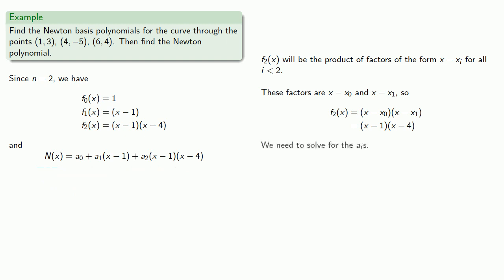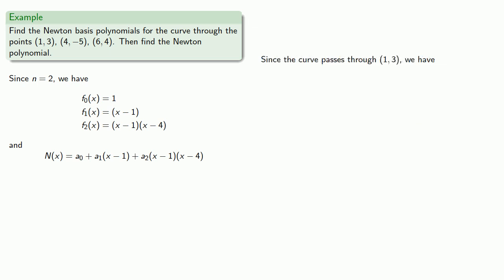And now we need to solve for the ai's. Now since the curve passes through (1, 3), we know that if x is equal to 1, N(x) should be equal to 3. So if we substitute in x equals 1, and here's why the form of the Newton basis polynomials is so useful. Notice that at x equal to 1, our second and third Newton polynomials are going to evaluate to zero. So the unknowns a1 and a2 don't appear in our equation. And so we end up with the equation 3 equal to a0, which gives us our first coefficient.